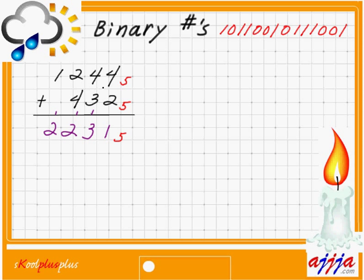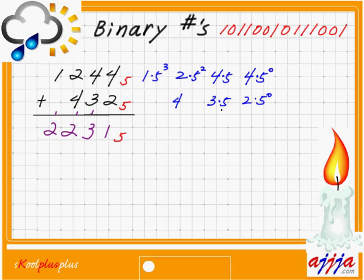Now I'm going to convert these numbers: 1 2 4 4 base number 5 to decimal. So 1 times 5 to the third power, 2 times 5 to the second, 4 times 5 to the first, 4 times 5 to the zero. Also 4 3 2 base number 5: 4 times 5 to the zero, 3 times 5 to the first, 2 times 5 to the second. Then we add everything.